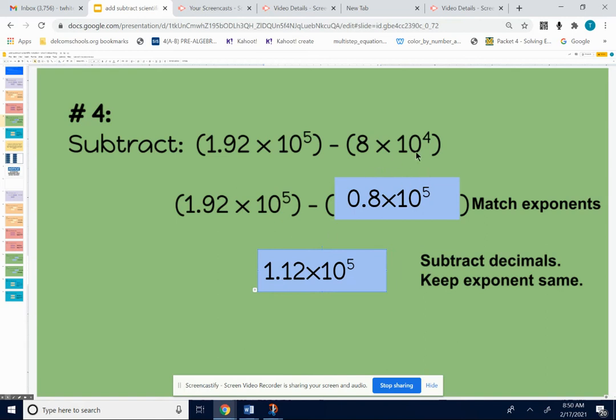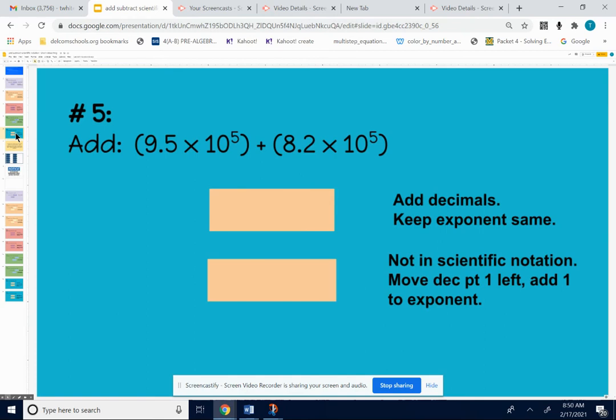But at the very beginning, I had to get the exponents to match up. I had to add 1 to my 4 to get 5. I had to move the decimal point 1 to the left. Okay, last one together. And I'm going to have you try to do some on your own.